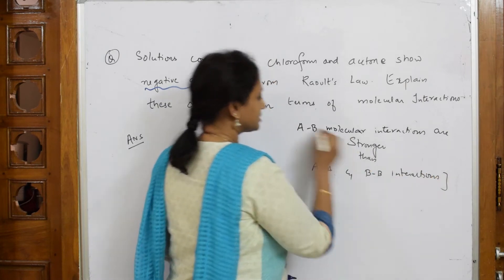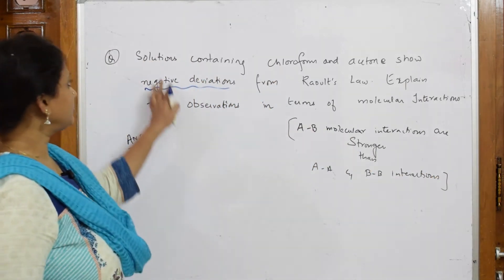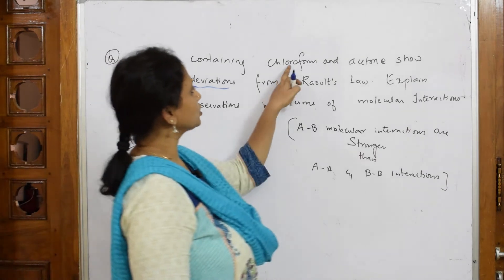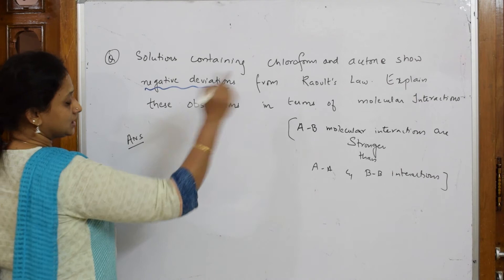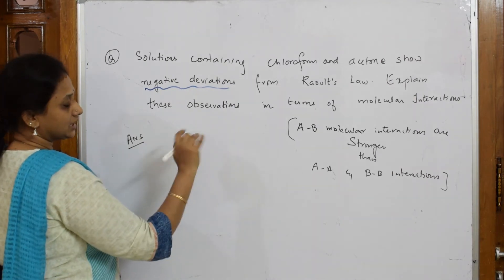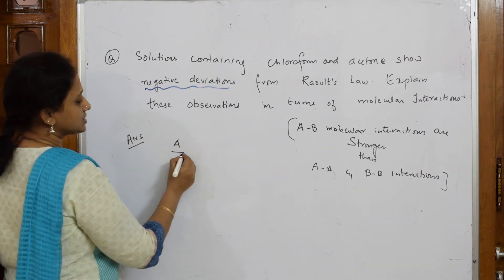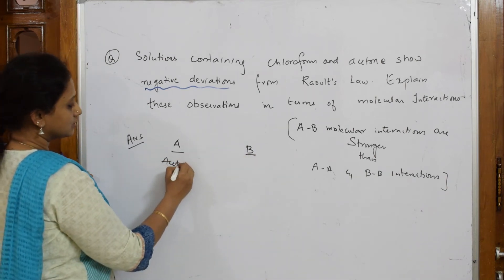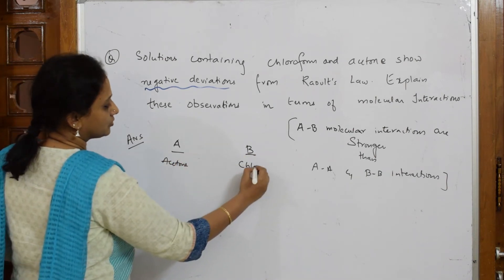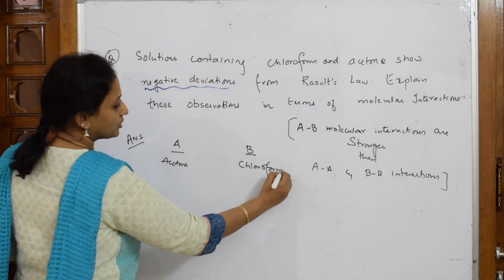If you understand the concept, you can write any type of question. Now they've given me two components here - one is chloroform, one is acetone. You can take A and B. Let me take A as acetone and B as chloroform.